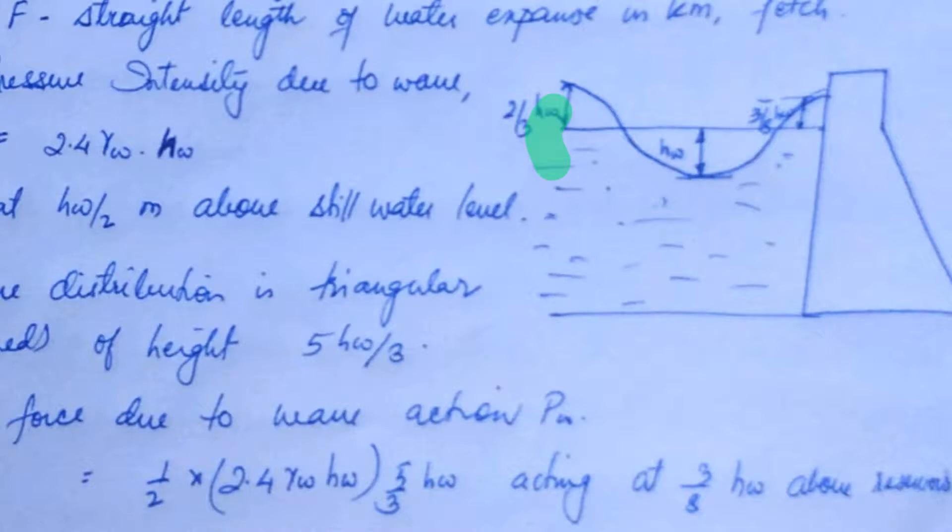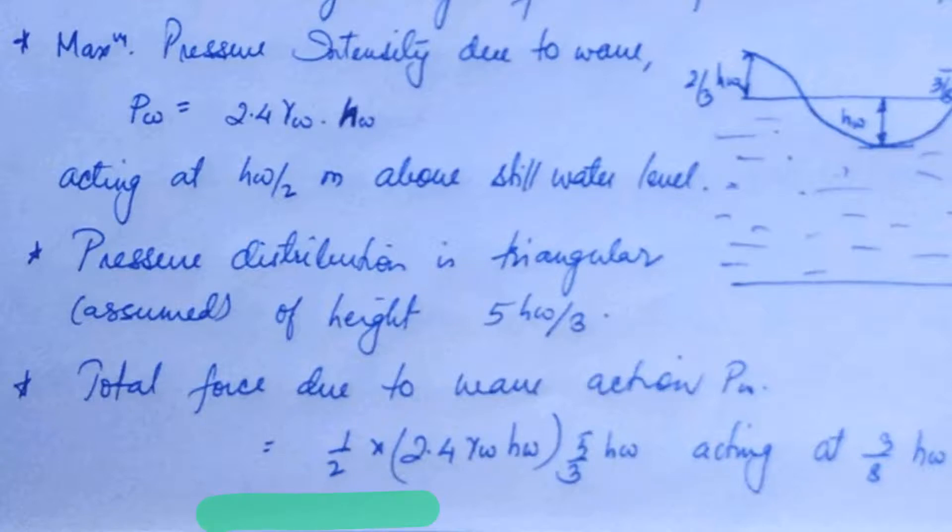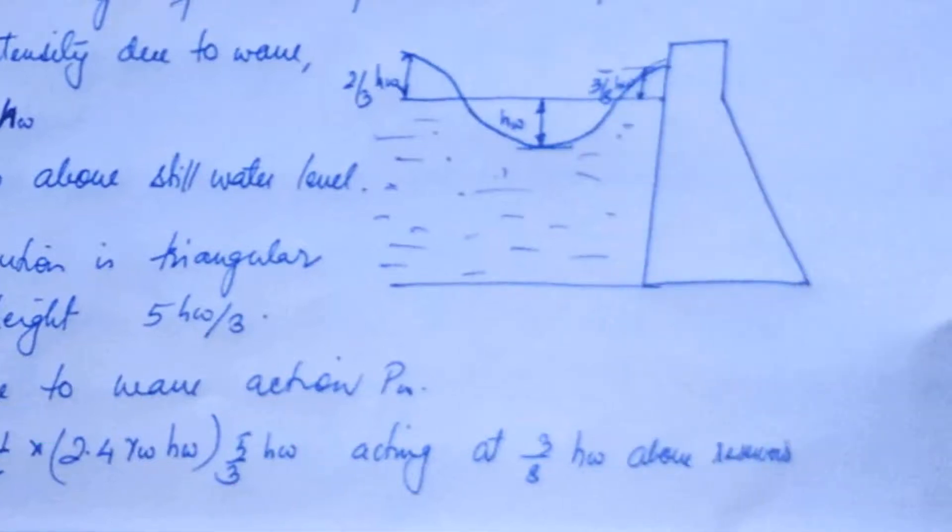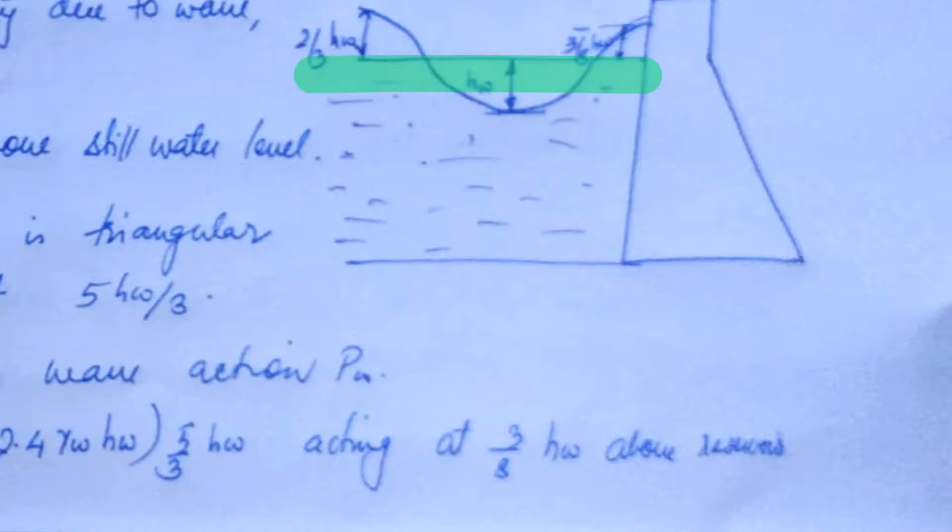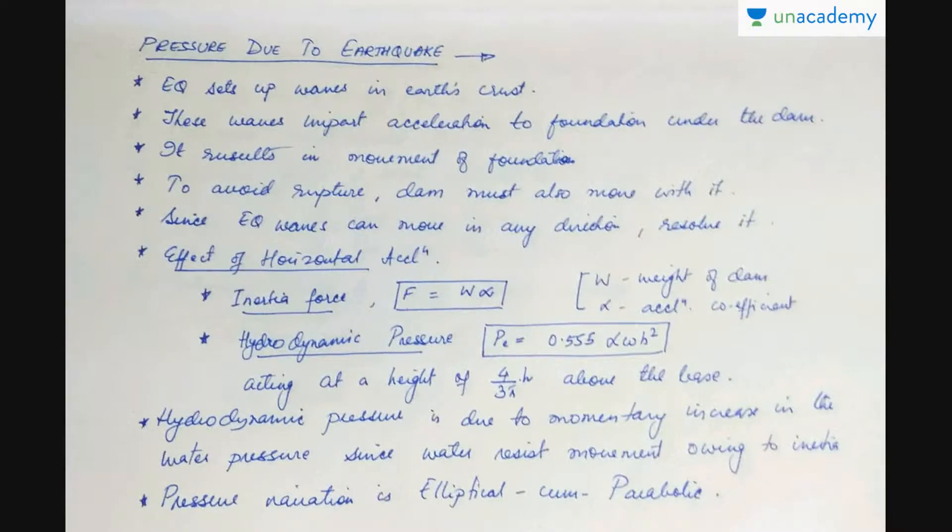We assume that the pressure distribution acts at a height of 5 hw by 3. The total force due to the wave action is actually equal to half base into height: half 2.4 gamma w hw multiplied by 5 hw by 3. And this overall force acts at a height of 3 upon 8 hw above the reservoir level. This is the position where the force is assumed to be acting, and this height is nothing but 3 by 8 hw.